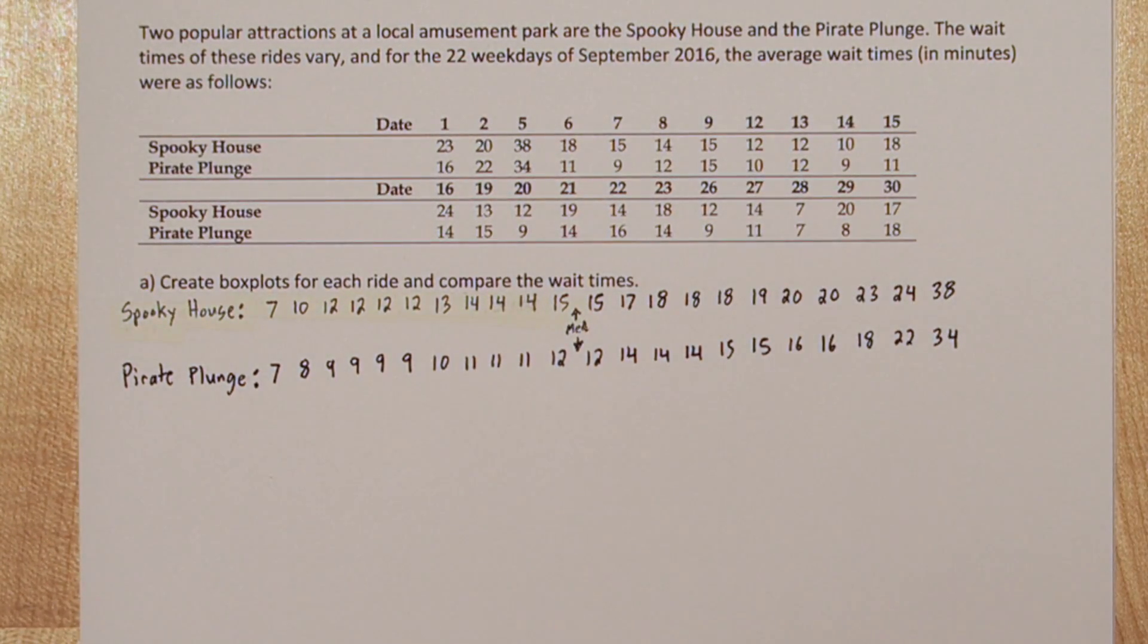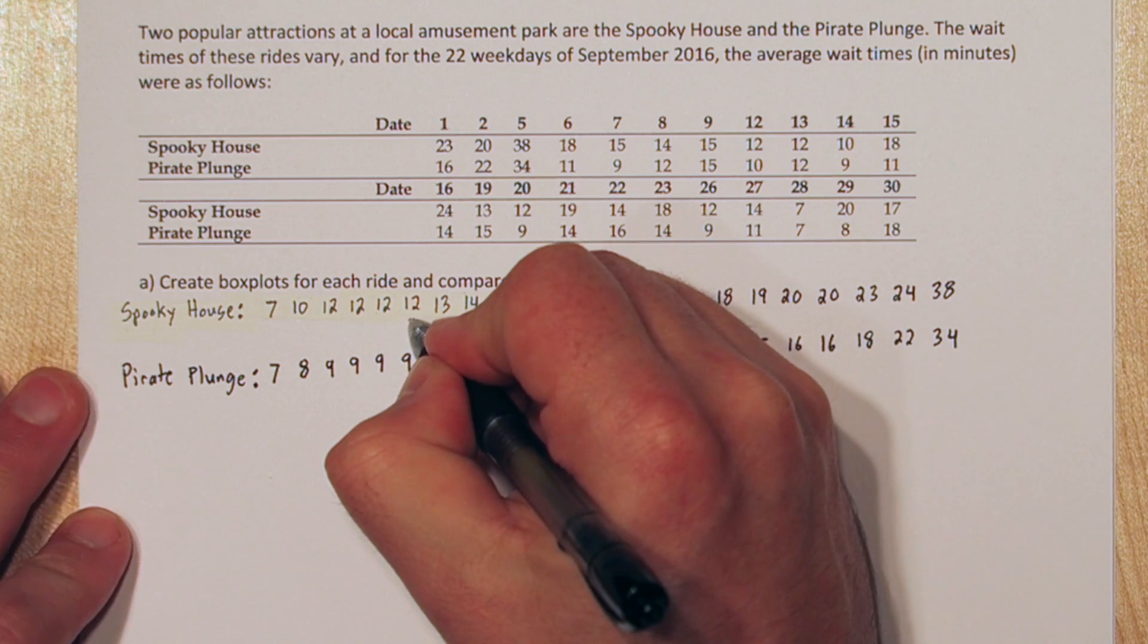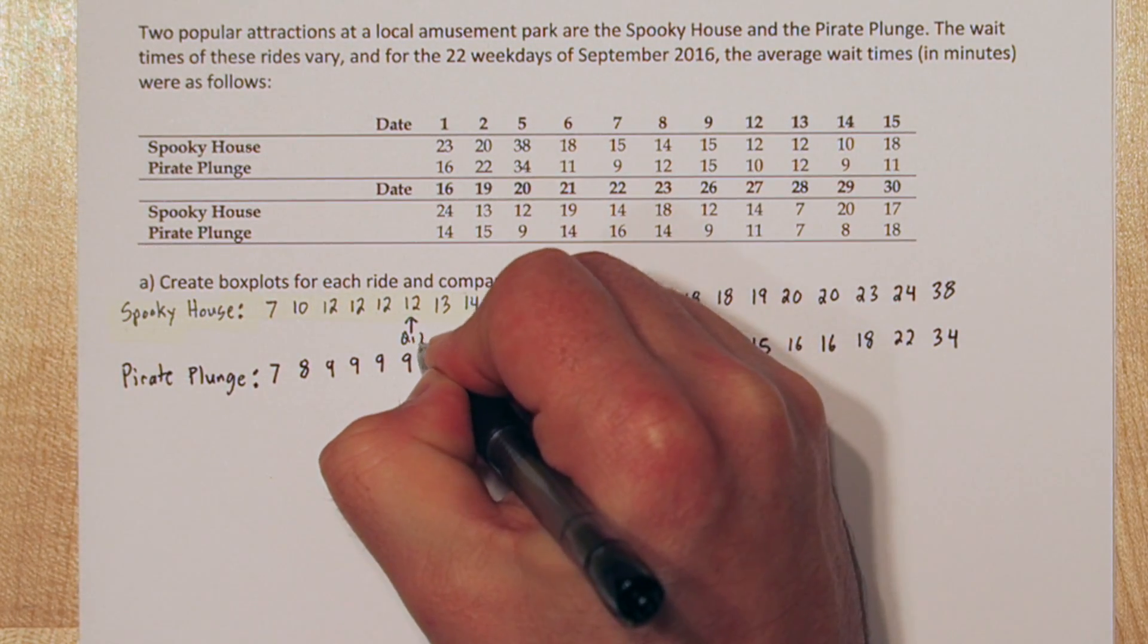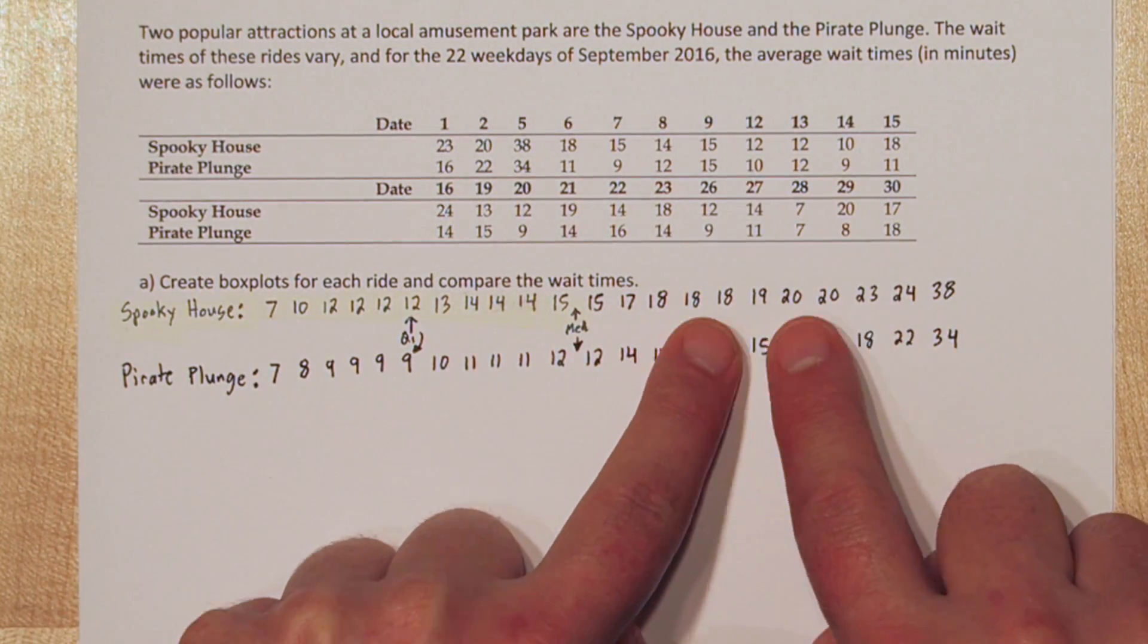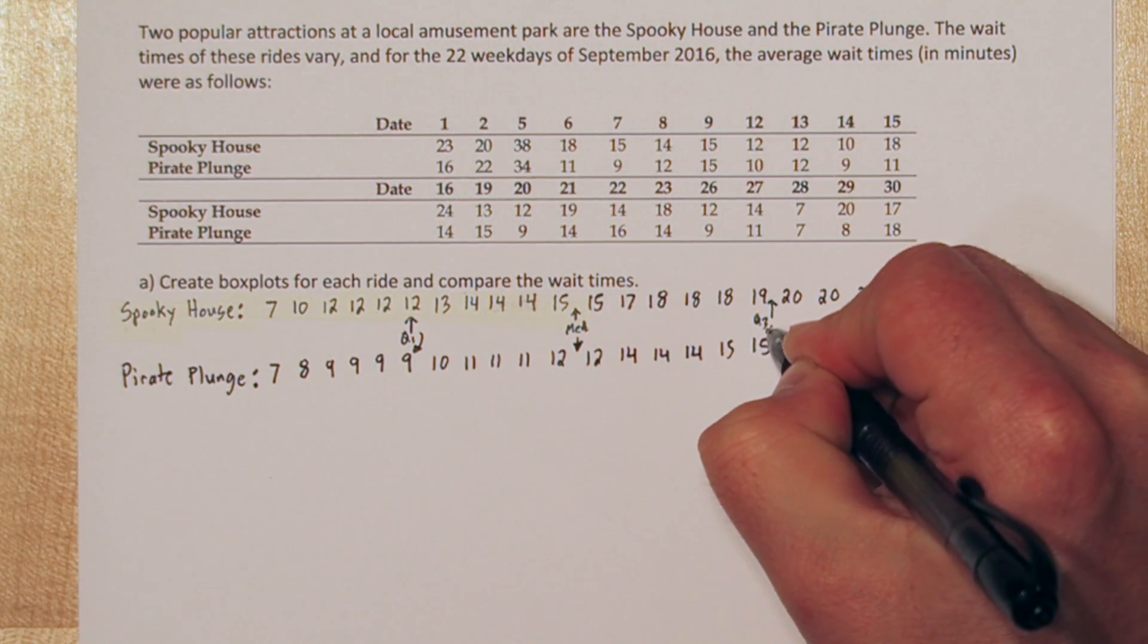Now we need to find quartile 1. To do that, we're going to find the median of the lower half of the data. It's this 12. And for Pirate Plunge, it's the 9. Now let's find quartile 3 the same way. Quartile 3 is the 19 and the 15.